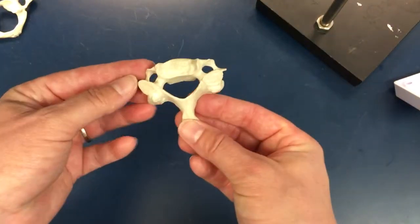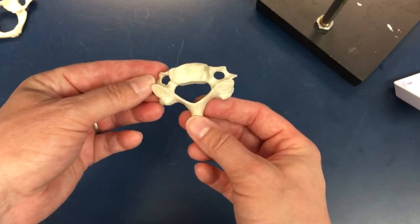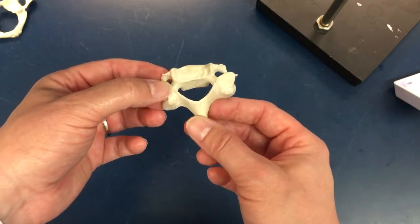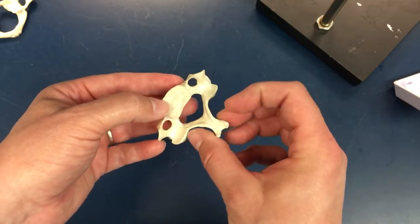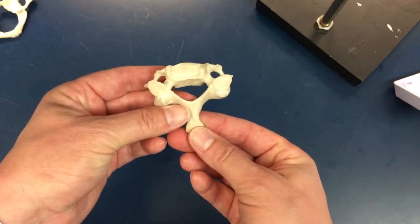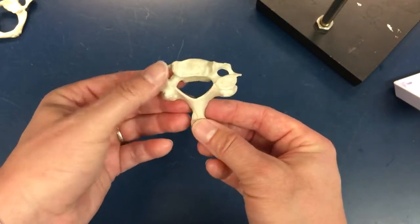This last one is neither a C1 or C2. It's one of the other five cervical vertebrae in our neck, and this is just referred to as a cervical vertebrae.